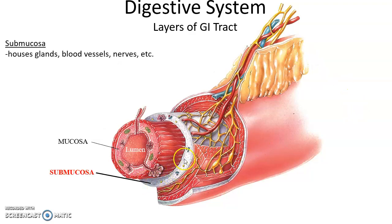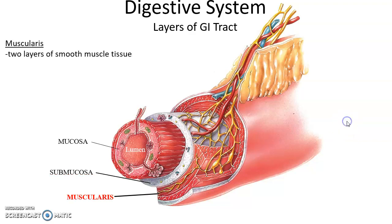The next layer is the submucosa — connective tissue with blood vessels, nerves, and some glands embedded within it, mostly glands producing mucus. The next layer is the muscularis layer, which has two layers of smooth muscle tissue. It is this smooth muscle in the muscularis layer that moves materials along the gastrointestinal tract.